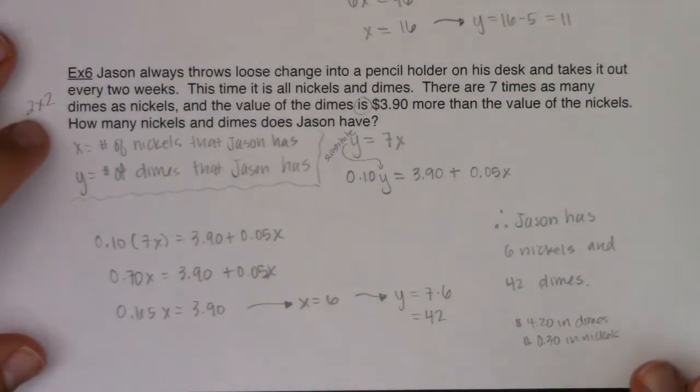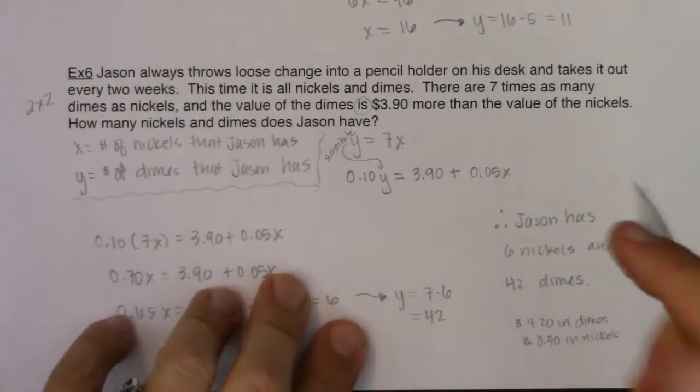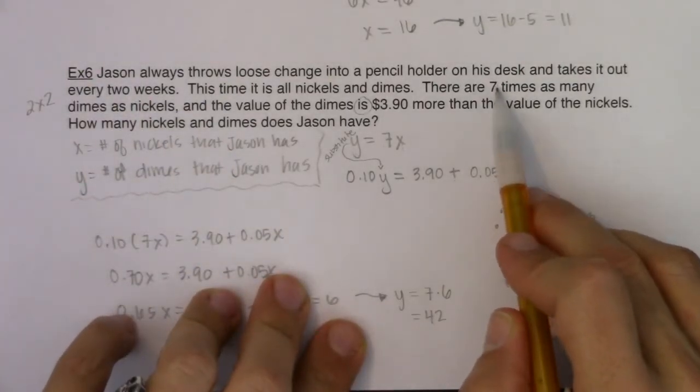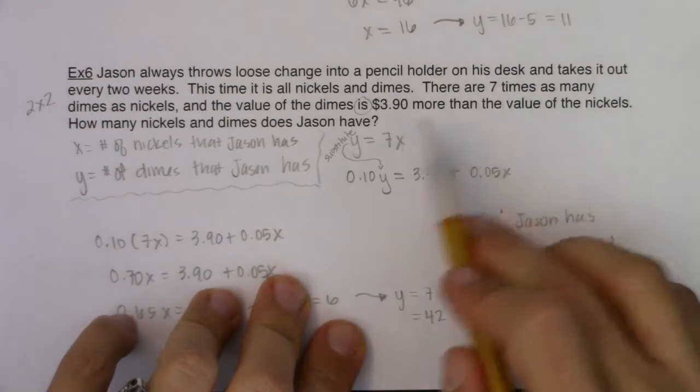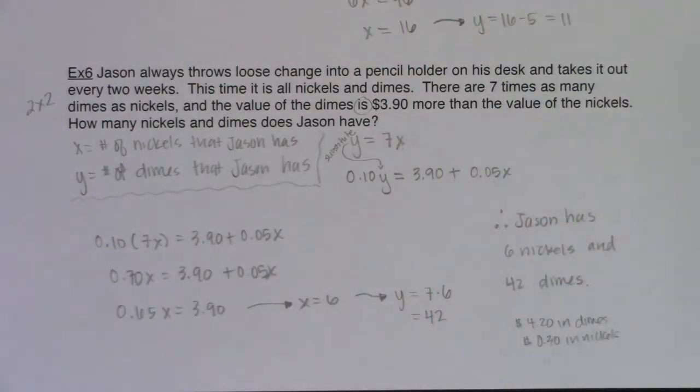And it's just a good little check to do, especially with a problem that's as tricky as this one. I think this sentence in particular, the 7 times as many dimes as nickels, that can trip people up. So we want to be really careful with that. Alright, so we're done with the 2x2s. We're going to move into 3x3s. We're going to solve a general problem and then we're going to solve a couple of applied problems. I'll see you in a bit. Bye.